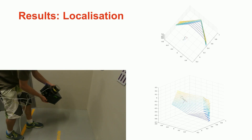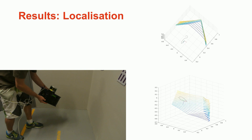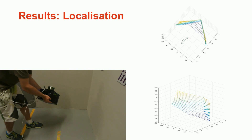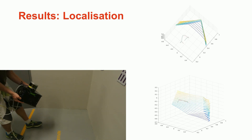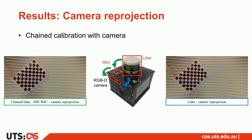In the absence of ground truth, we show qualitative results such as the trajectory of the IMU here on the right. We also show the performance of our method by comparing the reprojection of LiDAR points in the camera frame of our sensor suite.